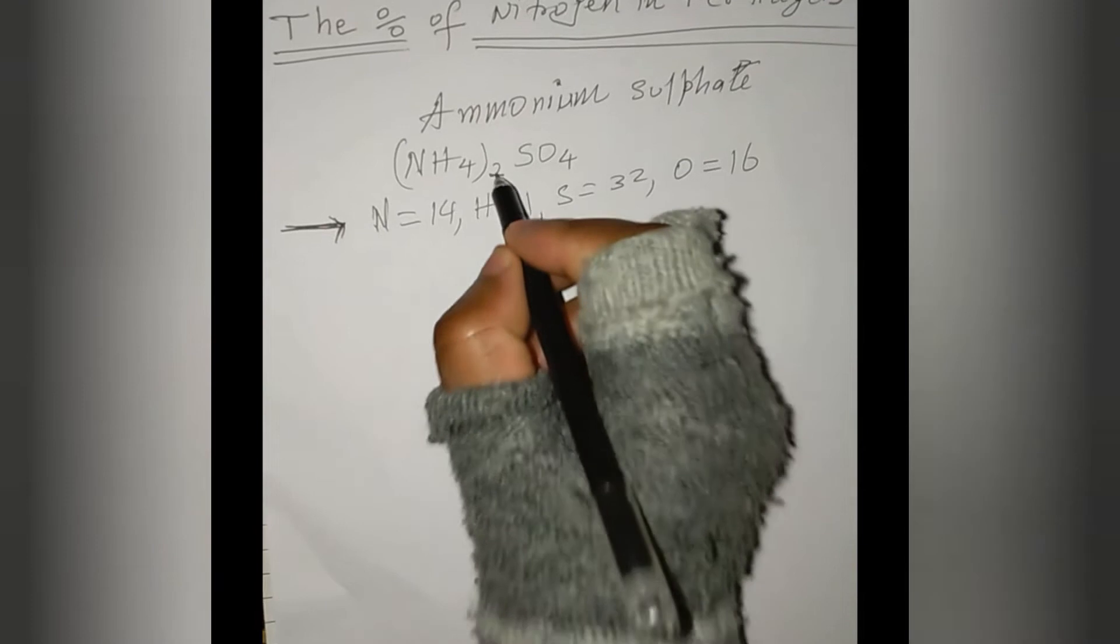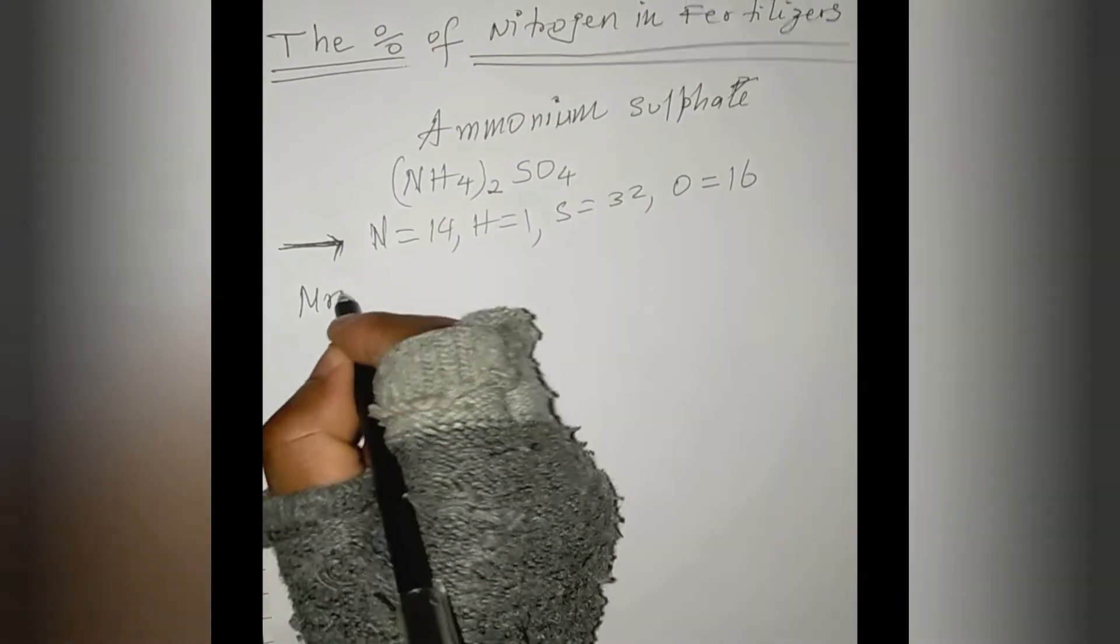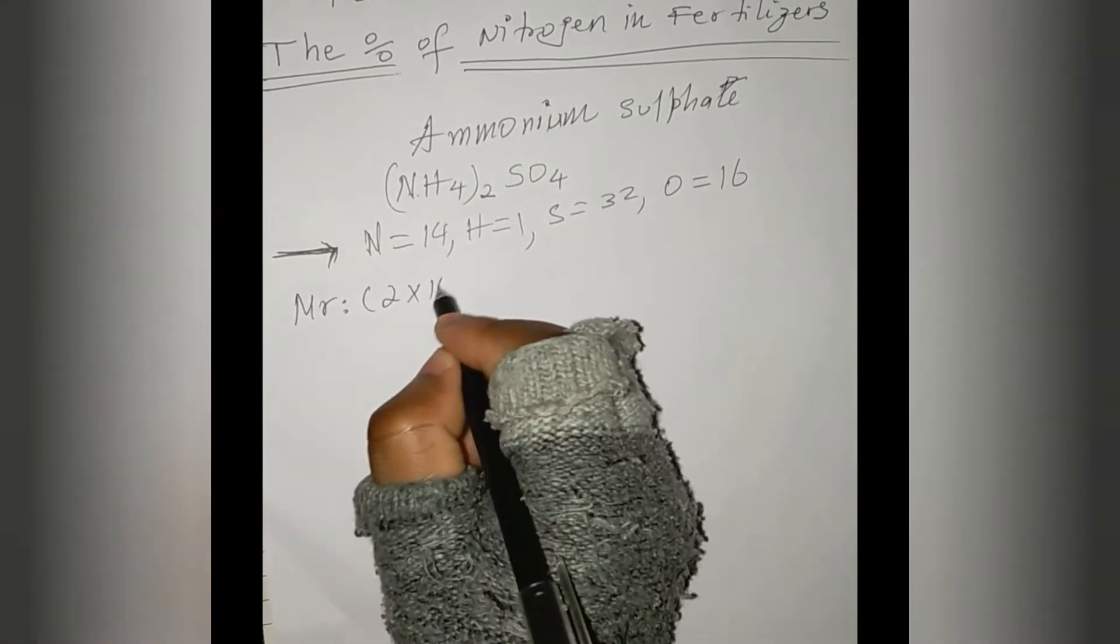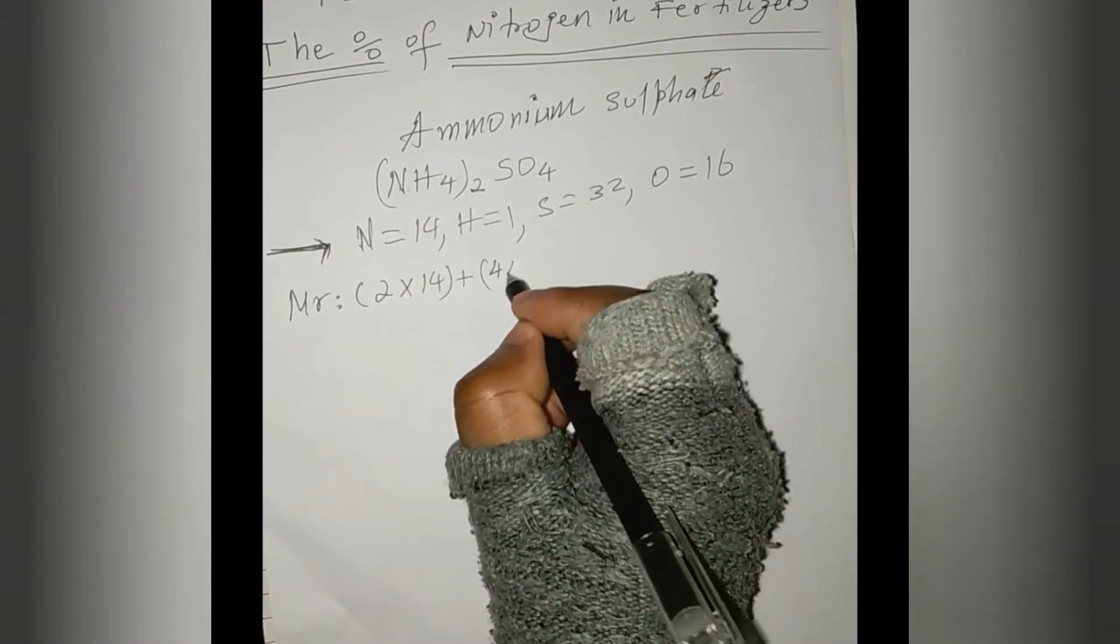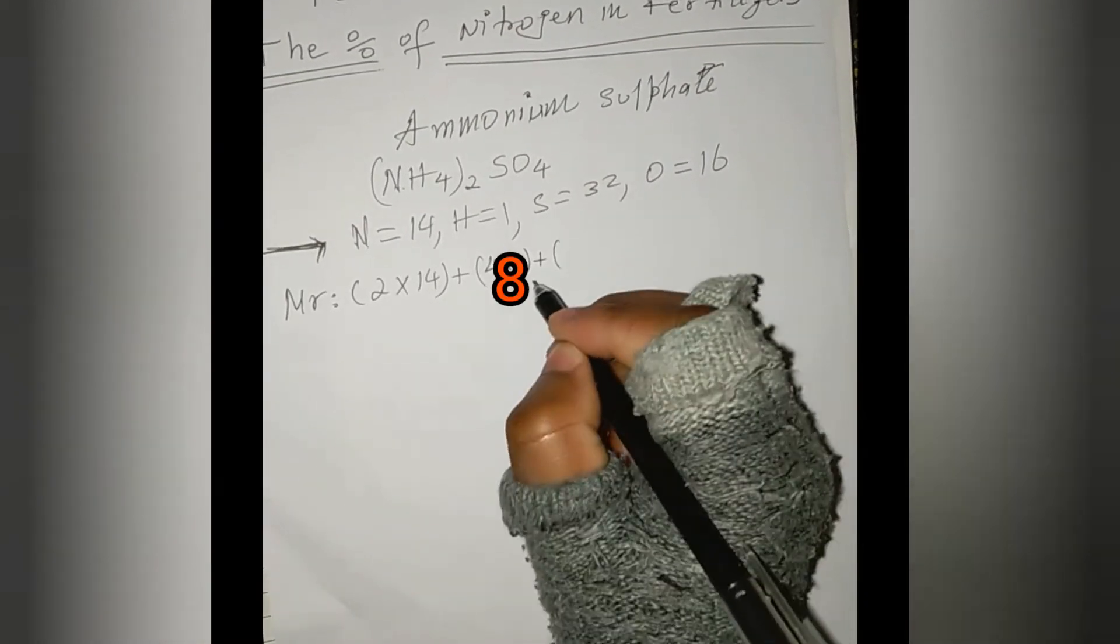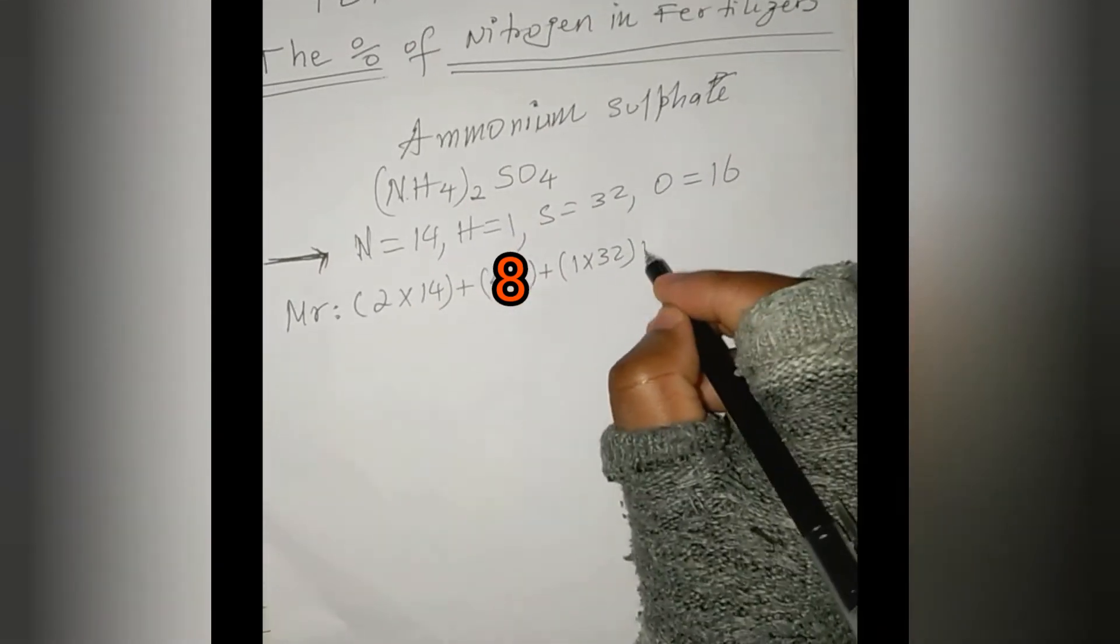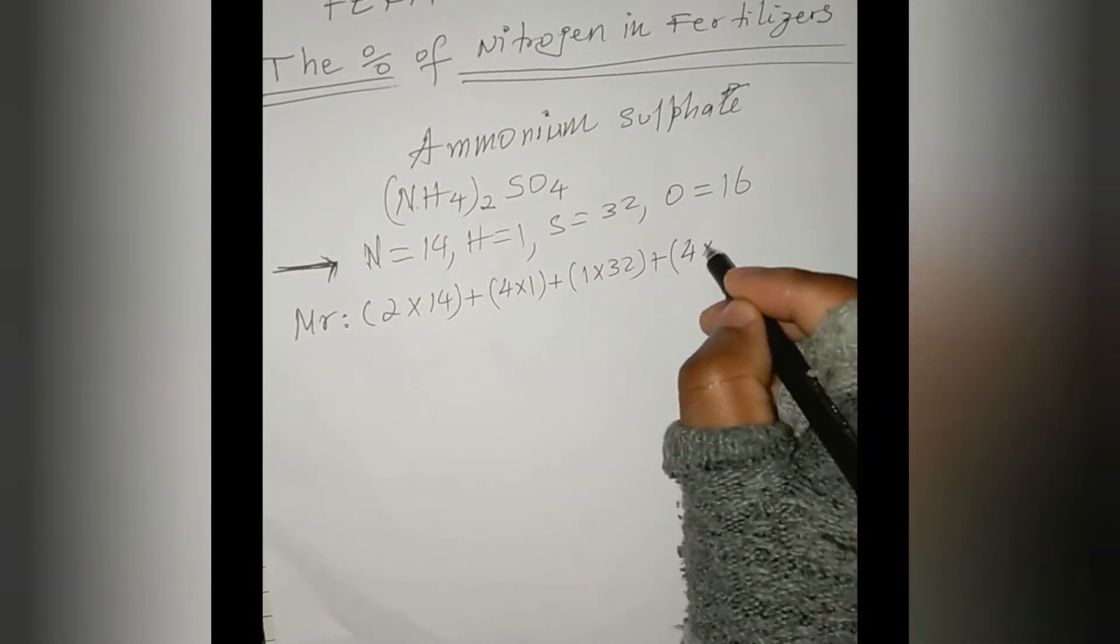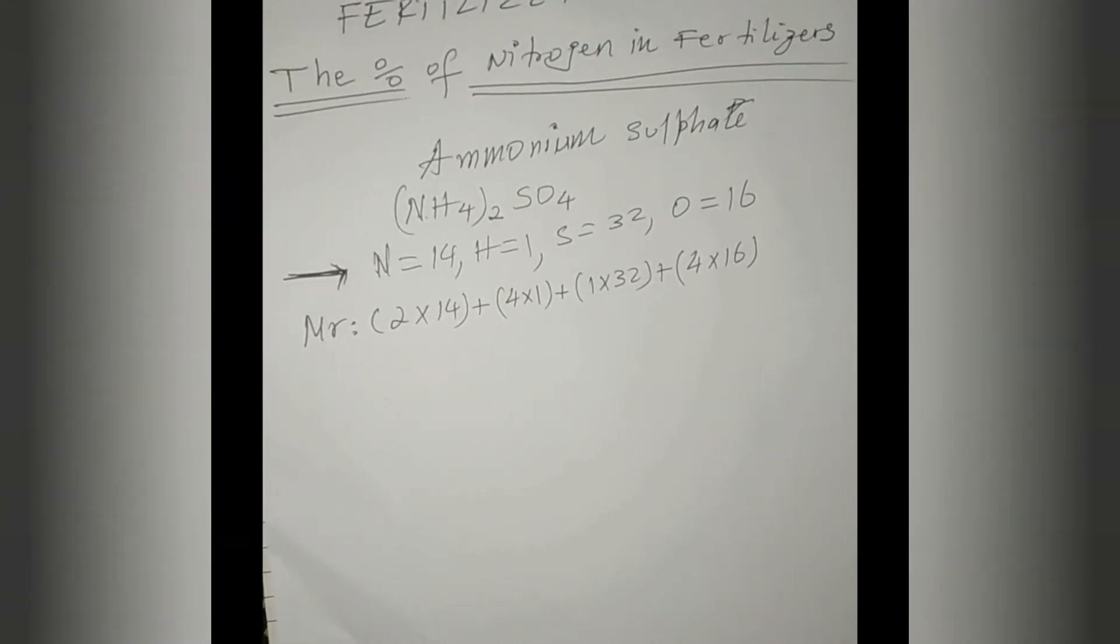Second, we have to find the average atomic mass number of the compound taking into consideration the stoichiometric number. The average mass number would be equal to: how many moles of nitrogen do we have? We have 2 moles, which means 2×14, plus how many hydrogens? We have 4 hydrogens, so 4×1, plus we have 1 sulfur, which means 1×32, plus how many oxygens? We have 4 oxygens, 4 moles of oxygen, which means 4×16.